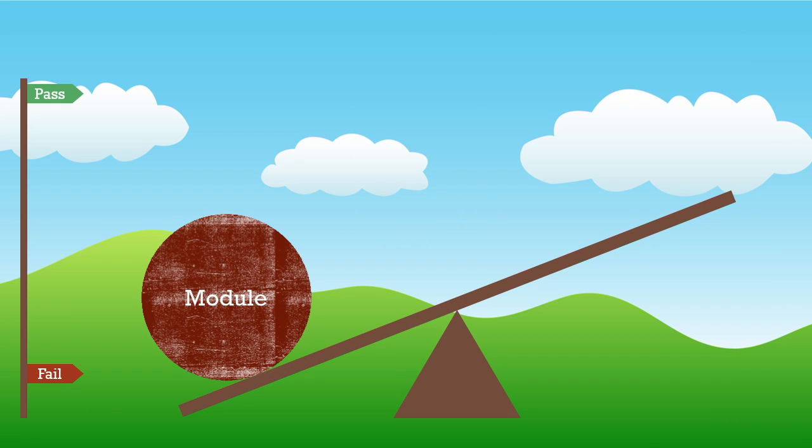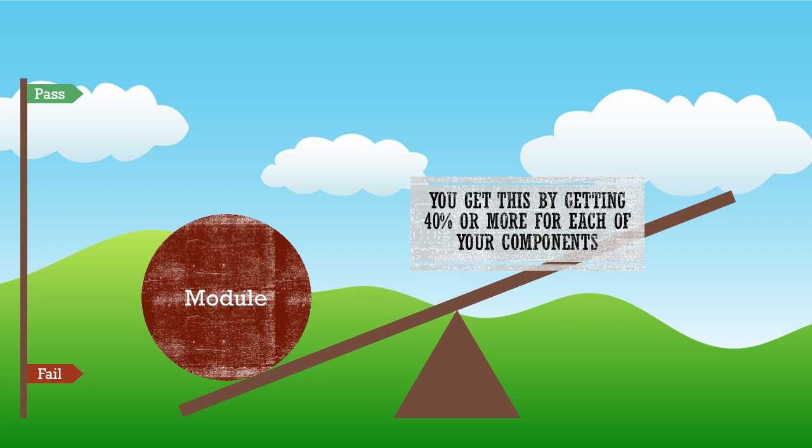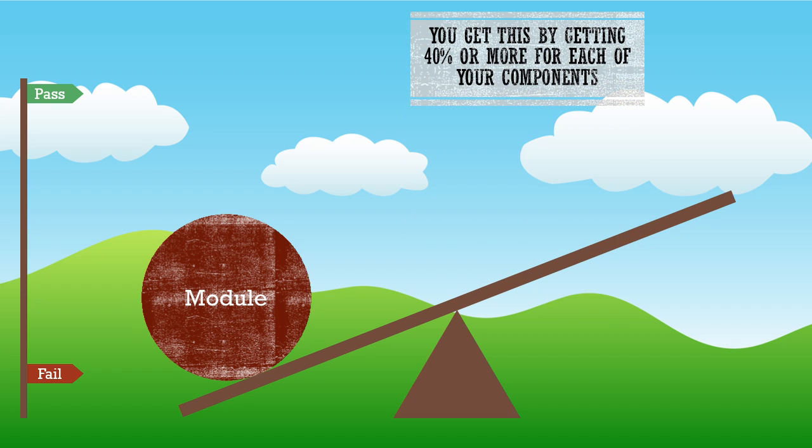To pass a module you need to get a 40% average for it. And in order to do this, you need to get 40% or more for each of your components.